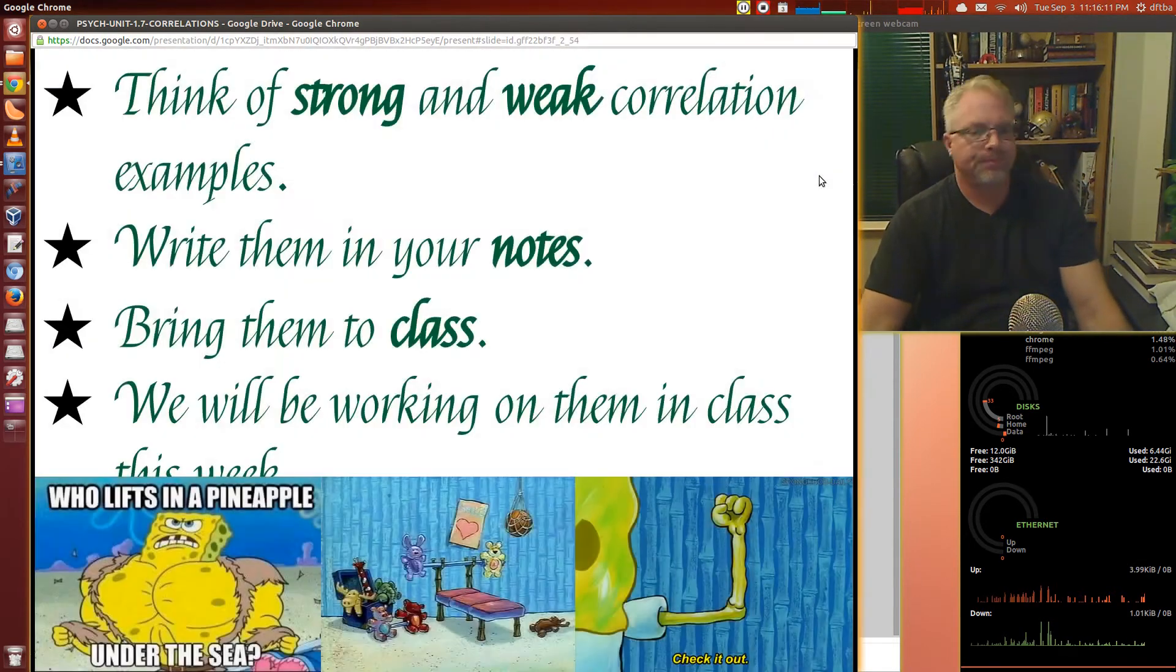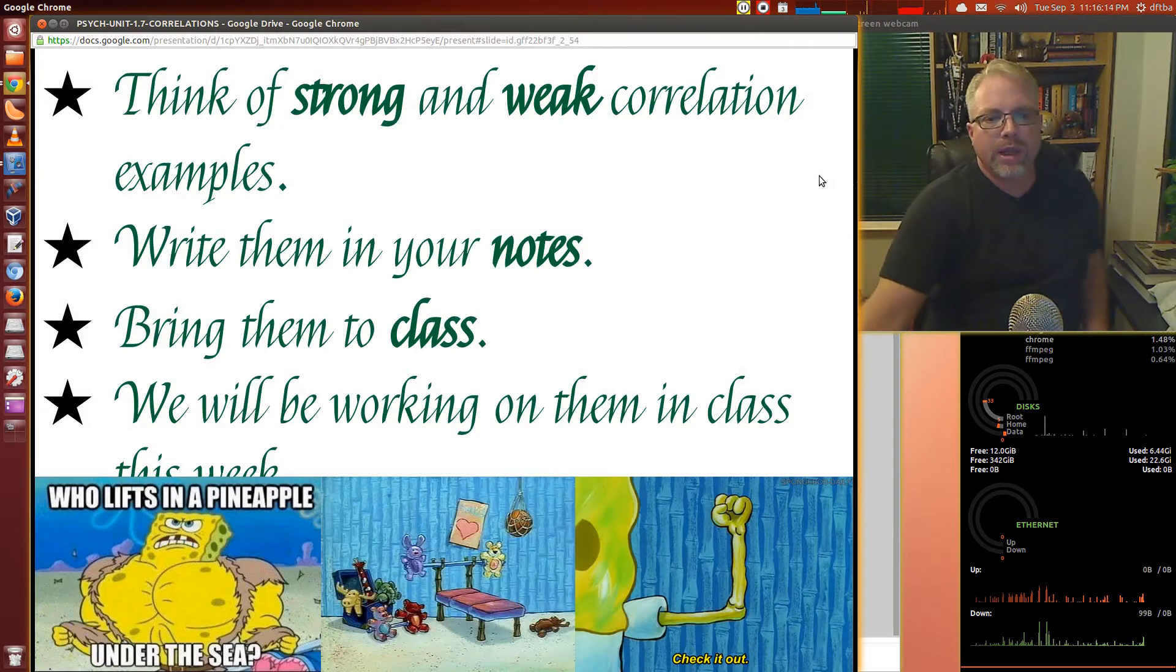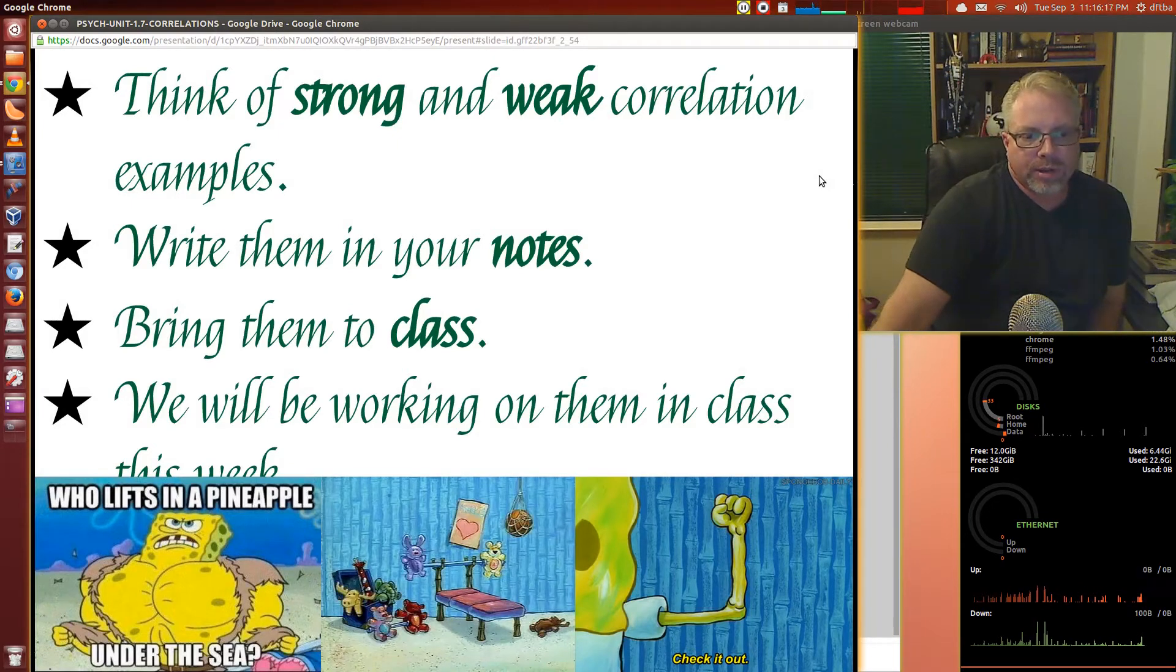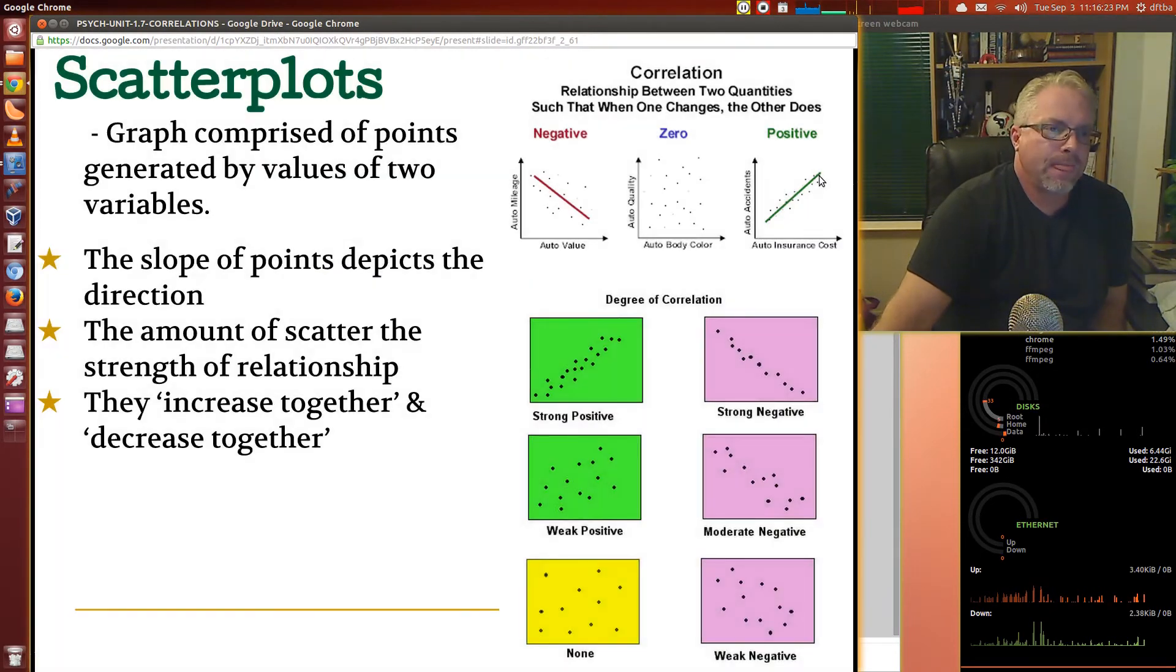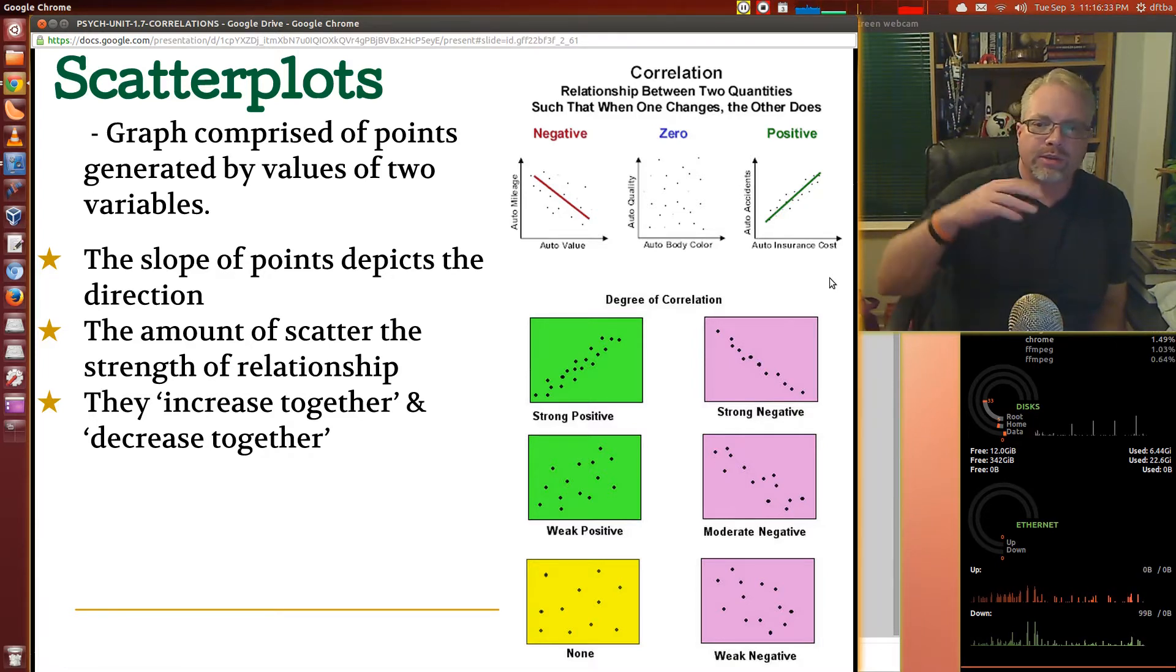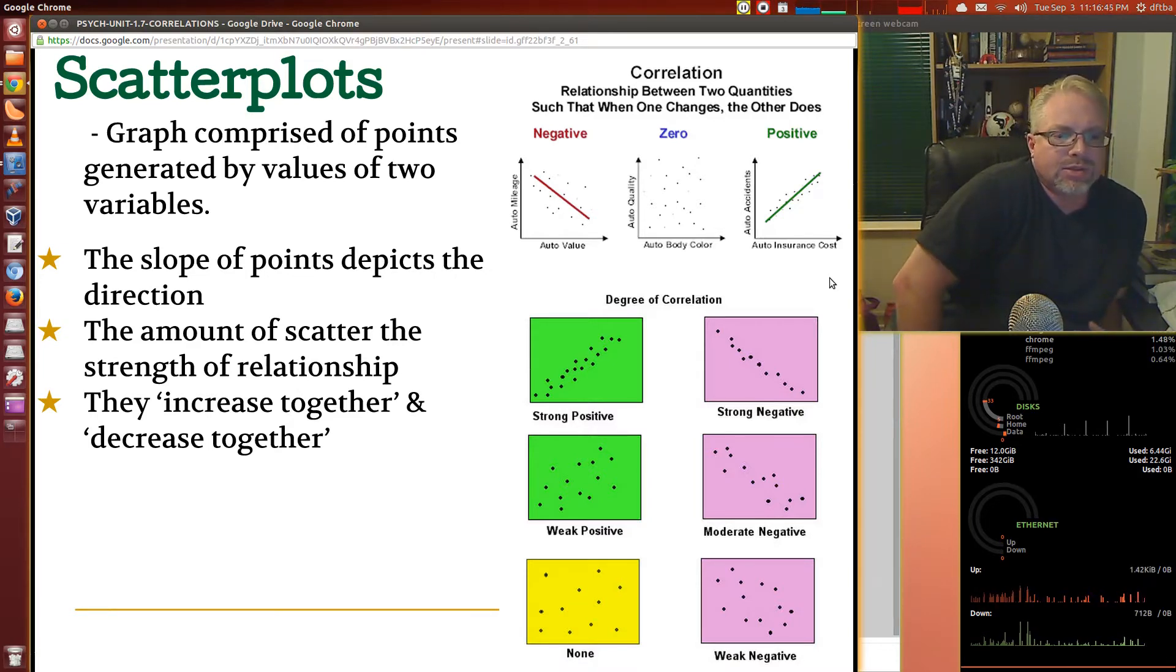Think of strong and weak correlation examples. Write those in your notes. Bring them to class. We'll be working on them in class this week. Let's look at scatter plots. Scatter plots are graphs that are comprised of points generated by values of two variables. These are data points. The slope of the points predicts the direction, or the overall slope. The amount of scatter will speak to the strength of the relationship.